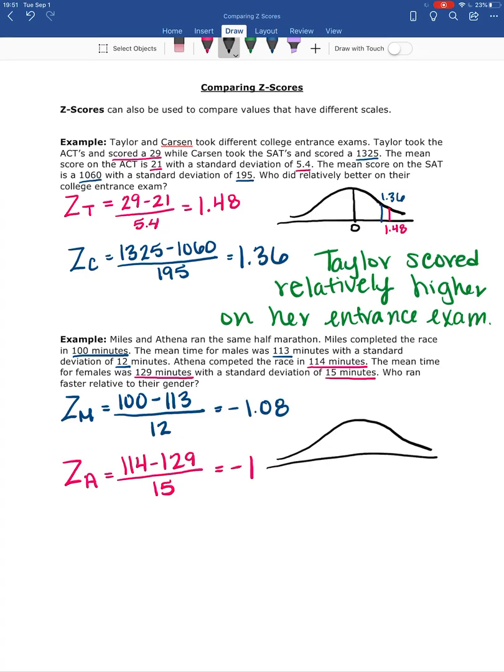So if I draw a bell curve to just kind of approximate where these fall, and this step of doing the bell curve isn't necessary, but it can be helpful for another visualization. So Miles is down here, maybe right here at negative 1.08, and Athena is here at negative 1.